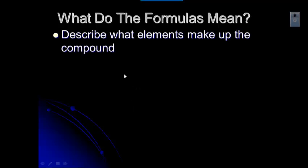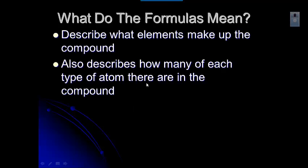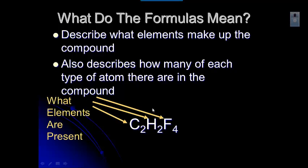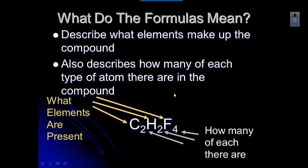The first thing we need to understand is what the formulas mean. Chemical formulas tell us what elements make up the compound and how many of each type of atom there are. For example, C2H2F4 tells you the elements in the compound — carbon, hydrogen, and fluorine — and those little subscripts tell you how many of each there are: two carbons, two hydrogens, and four fluorines.